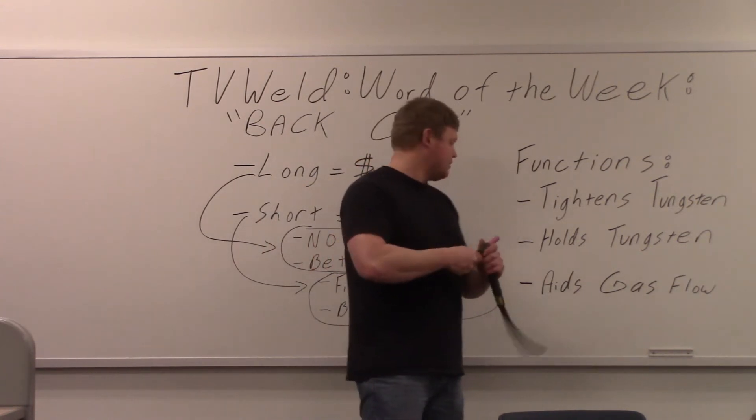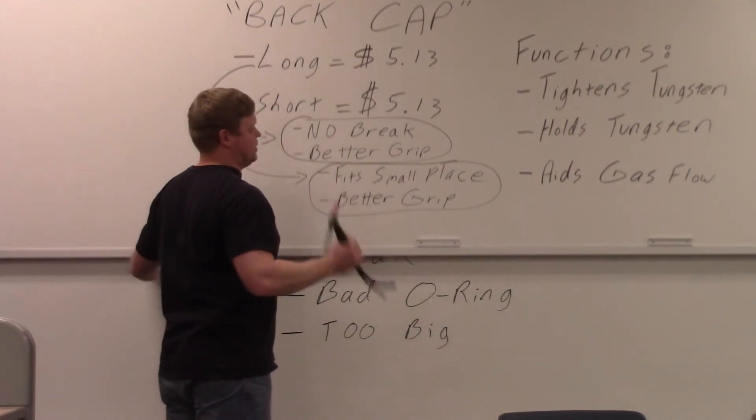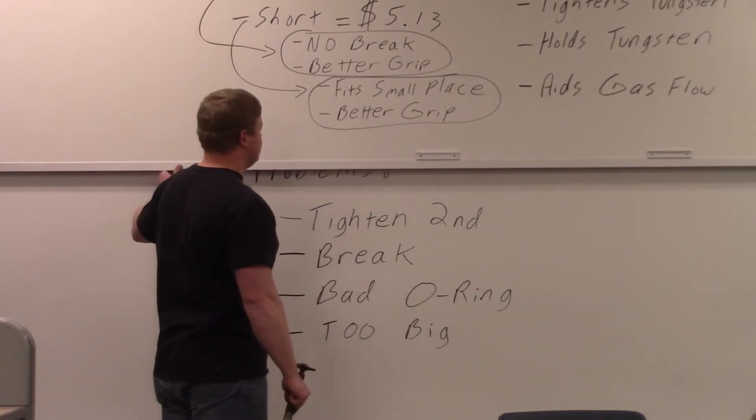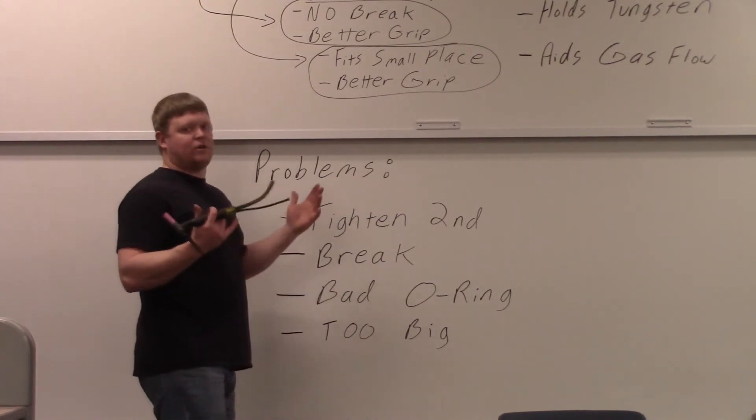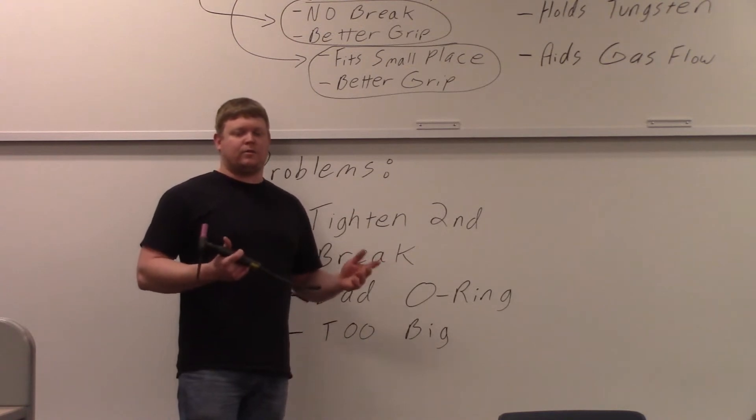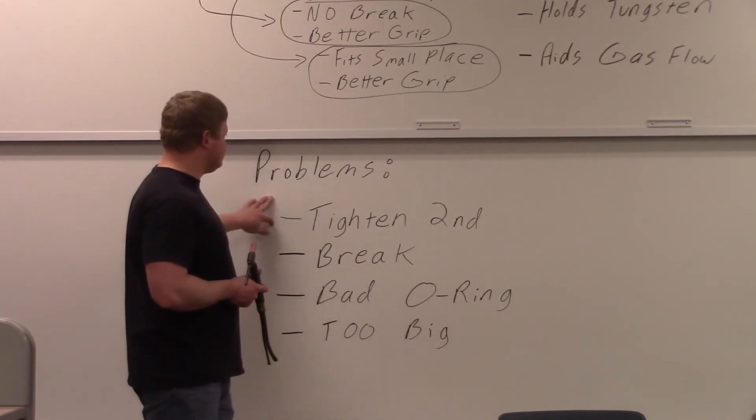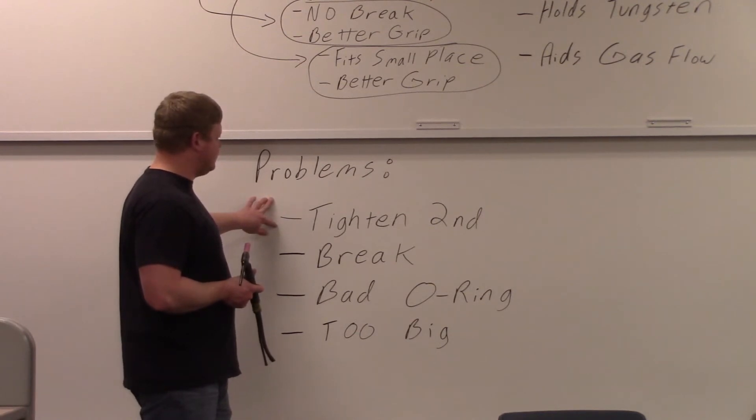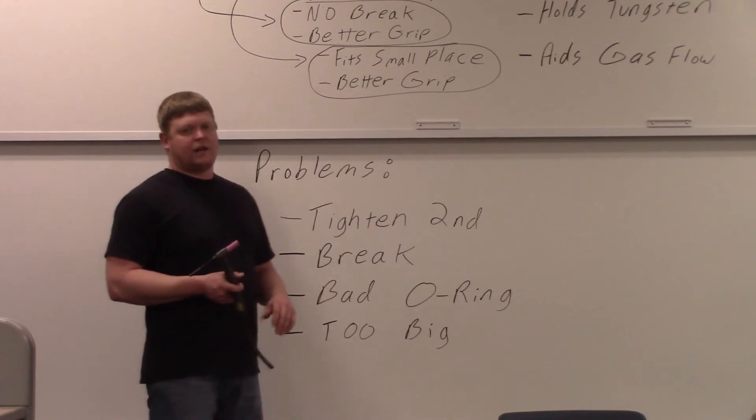That's not one of its main functions, but it does do that. So tightens tungsten, holds excess tungsten, aids in gas flow, cost about $5.13. The cost always depends on the brand. Some brands are more expensive than others. I just looked at the bottom brand of a Google search. So problems: tighten second.